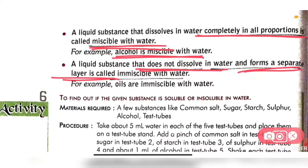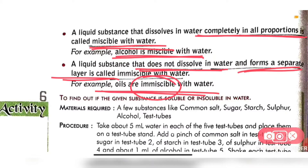Some liquids do not dissolve in water properly and they form a separate layer. A very good example is oil — those are called immiscible liquids. If we mix oil with water, we can see that they form two different layers. It is not completely mixed with water, so oil is immiscible with water.